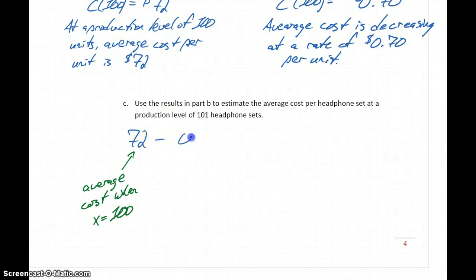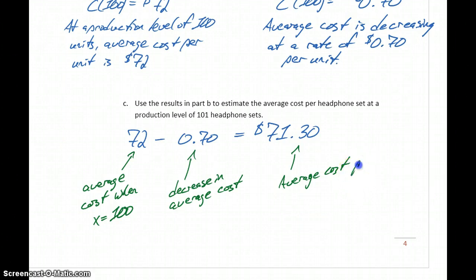And then we can subtract 0.7 since that's the decrease in our average cost when we produce one additional item. Subtracting those two values we get 71 dollars and 30 cents, which is our average cost per item at a production level of 101 units.